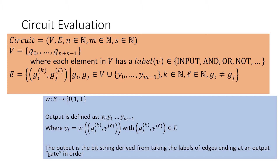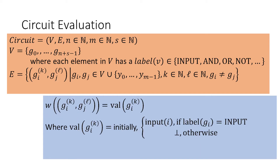Recall that when we were defining the representation of our circuit, some of the edges had an output bit as their destination — those were the y values. The way we get an output string from this circuit is we look at all of those edges that ended in one of those output locations, in some particular order, and take those values from the function W and assemble them into an output string. However, we haven't yet described the behavior of the circuit or connected its inputs and outputs.